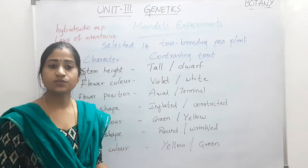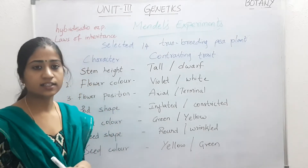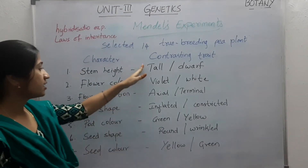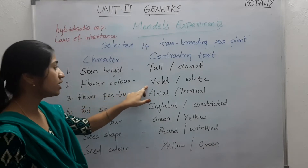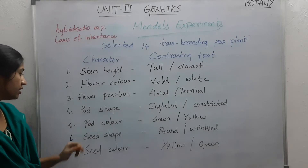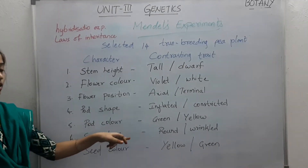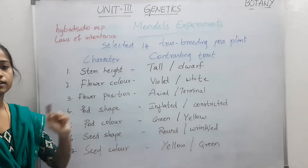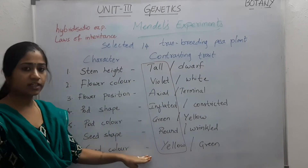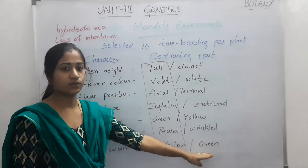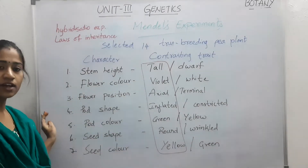which were similar in all characters except for one character with contrasting traits. Some of the contrasting traits he selected were: stem height — tall or dwarf; flower colour — violet or white; flower position — axial or terminal; pod shape — inflated or constricted; pod colour — green or yellow; seed shape — round or wrinkled; seed colour — yellow or green. The first trait in each pair is considered dominant and the second is recessive. Remember, this simple table is going to help you throughout the genetics unit.